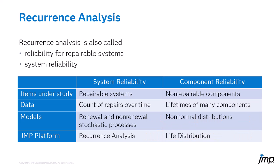Repairable systems are not removed from service when they fail. Instead, they are repaired and put back into service. Instead of measuring their lifetime, you will study the number of repairs and when they occurred. The models used to understand repairs over time are renewal processes and other stochastic processes.